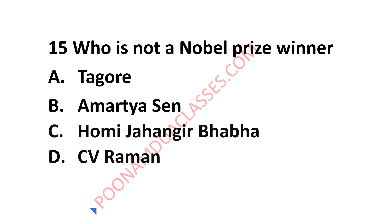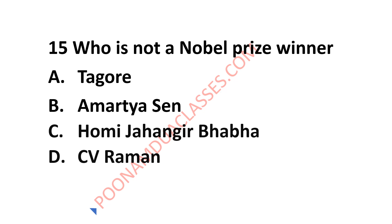The question was: who is not a Nobel Prize winner? Tagore received it, Amartya Sen has received it, and C.V. Raman has also received it. The correct answer is Homi Jahangir Bhabha. Homi Jahangir Bhabha was a most accomplished scientist who excelled in both theoretical and experimental physics, but did not receive the Nobel Prize.